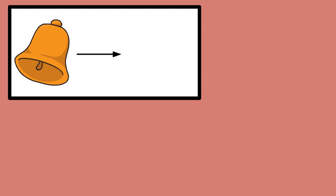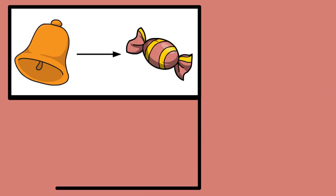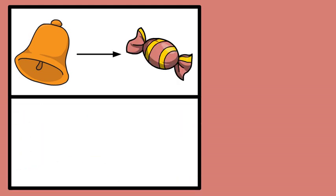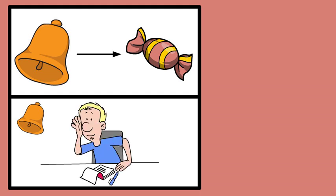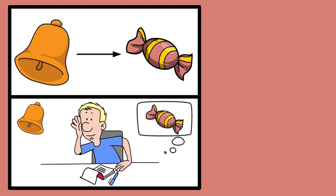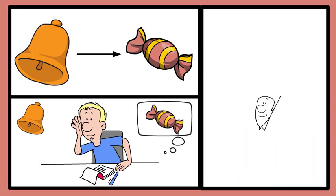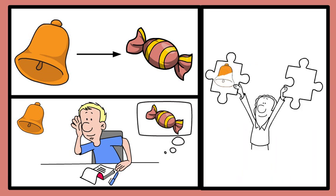For example, if every time you hear a bell you get a treat, you will start to associate the sound of the bell with getting a treat. Over time, you may start to get excited whenever you hear the bell because you know a treat is coming. This is classical conditioning — learning to connect two things together so that one thing makes you think of the other.